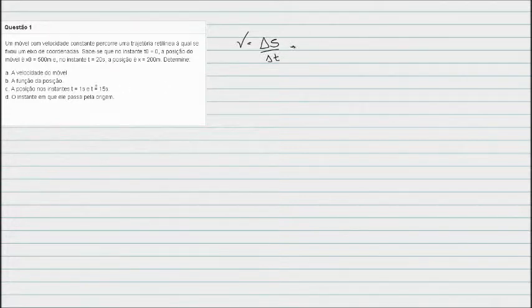Ele percorreu, ele saiu do ponto 500 metros e chegou no ponto 200 metros. Toda vez que a gente vai colocar a variação de espaço, a gente vai fazer assim: posição final menos a posição inicial.